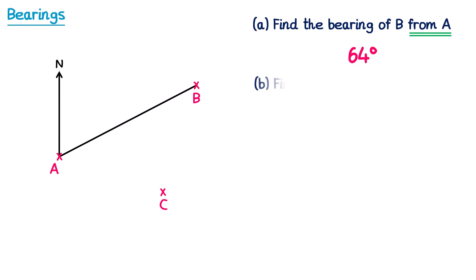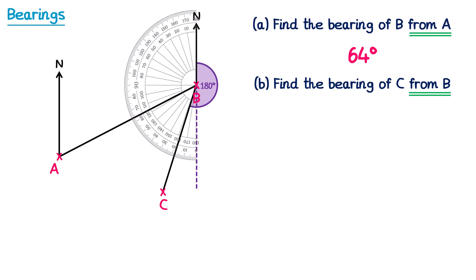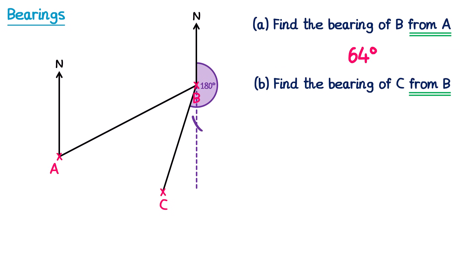Now let's do part B — finding the bearing of C from B. Since it says from B, we draw the north line at B, then connect up B and C. We imagine we're stood at B, facing north, and we turn clockwise until we face C, which would be this angle here. This is one of those more difficult angles to measure. I'm going to measure it by splitting the angle into two parts. The part on the right is 180 degrees, so I can take my protractor and work out the other part. Reading around the outside scale, this one is 18 degrees. So the total angle is 180 plus 18 degrees, which is a bearing of 198.